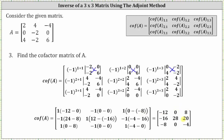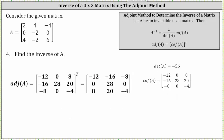You may want to pause the video and verify the remaining entries for the cofactor matrix. For number four, we're asked to find the inverse of matrix A using the adjoint method, where A inverse equals one divided by the determinant of A times the adjoint of A, and the adjoint of A equals the transpose of the cofactor matrix. So we do have to find the adjoint of A by transposing the cofactor matrix we just found.